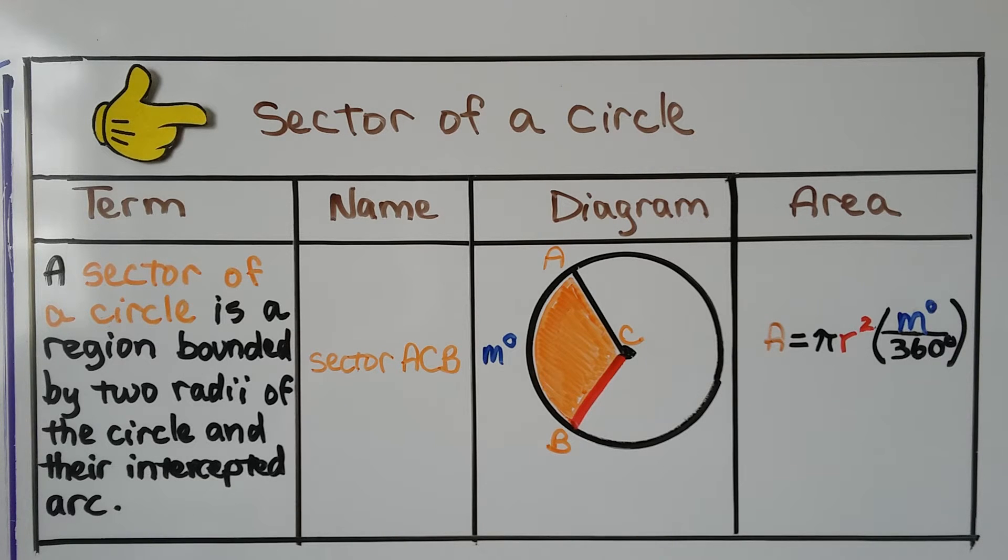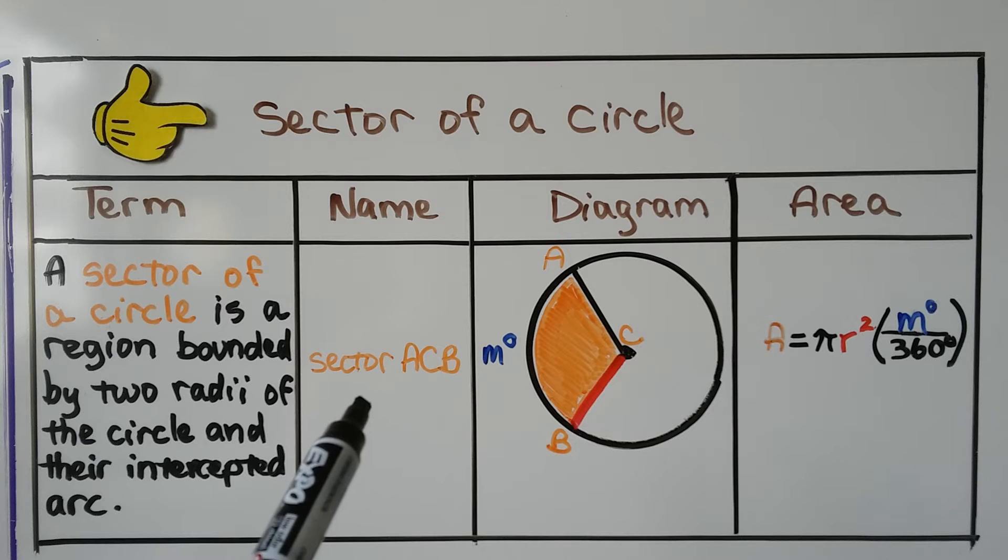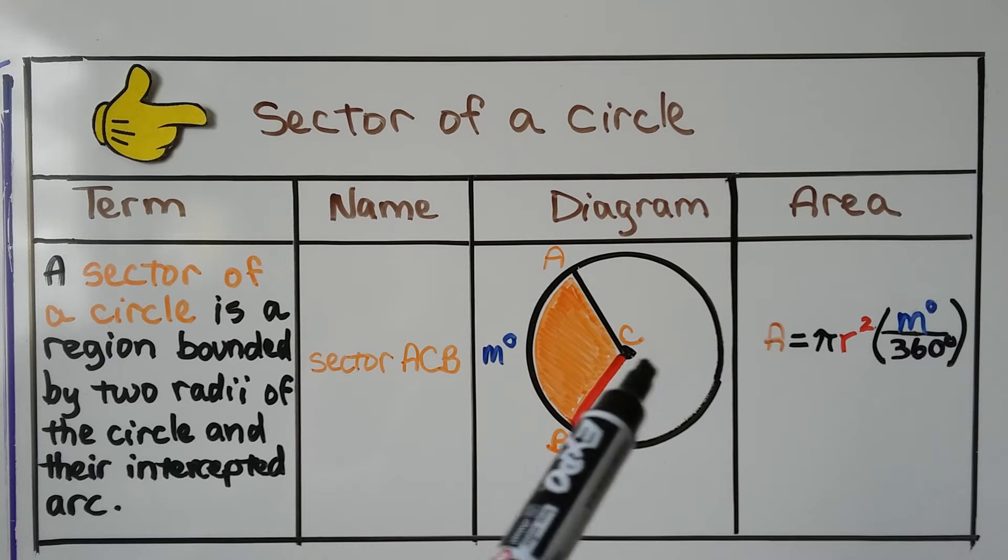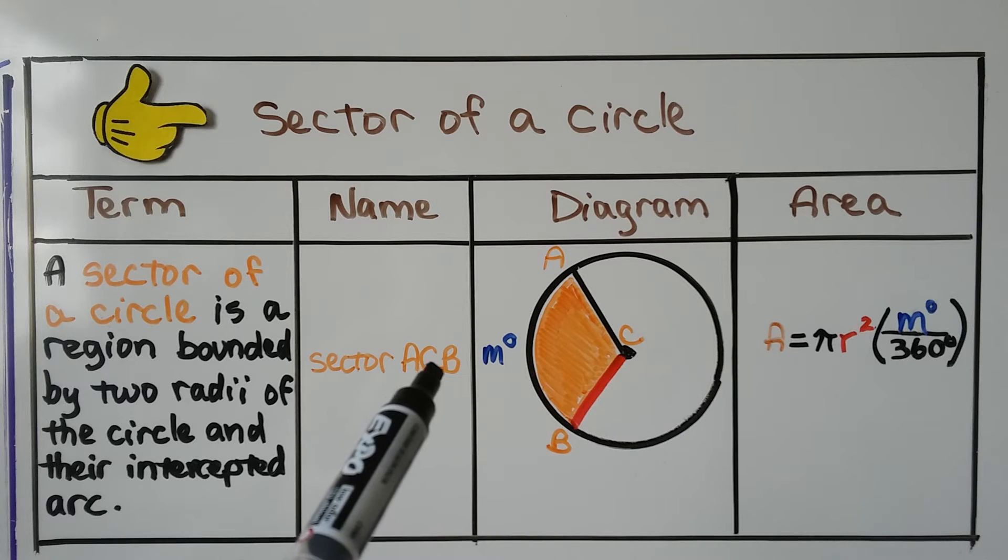So for your notes, for the sector of a circle, a sector of a circle is a region bounded by two radii of the circle and their intercepted arc. We can write this as Sector ACB. Notice the C is the vertex here, and that's the center letter.